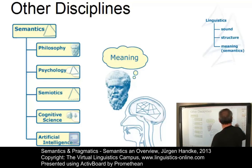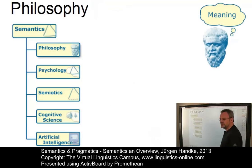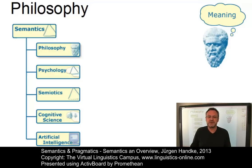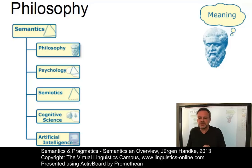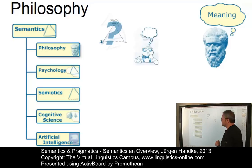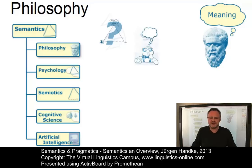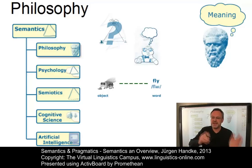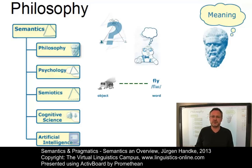Let's start with philosophy. While linguists take the notion of meaning as given and start working from there, the philosopher takes one step back and asks questions like: How is it possible for anything to mean anything? Or what sort of relation must hold between X and Y for it to be the case that X means Y? These are highly philosophical issues.